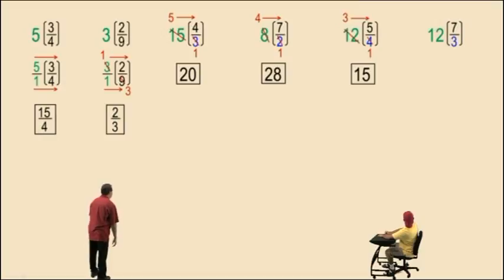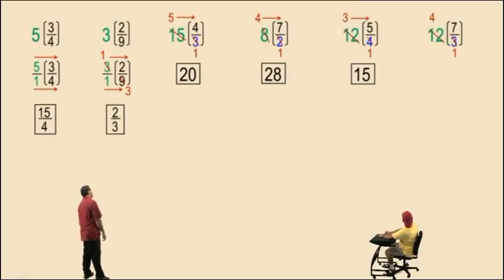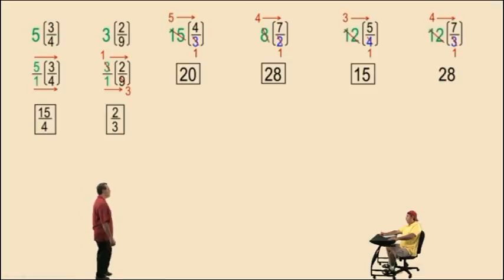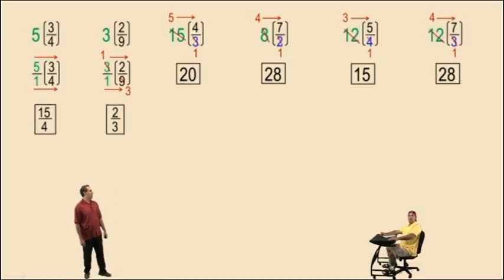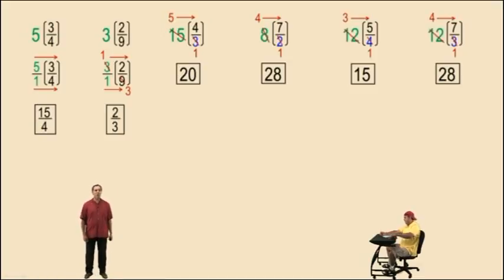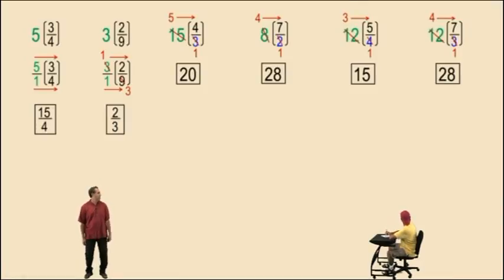Twelve times seven-thirds. How do you do this? Twelve divided by three is four. Four times seven is twenty-eight. Very nice there, Charlie — that was some good kung fu! In our next video, we're going to put this kung fu into action. I hope to see you again soon.